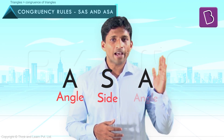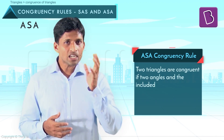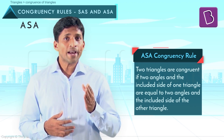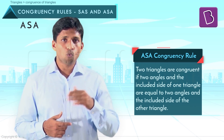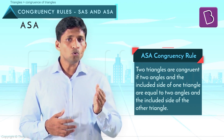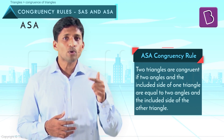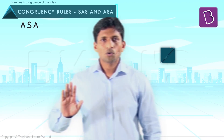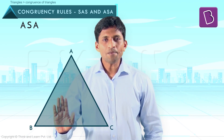Now we will discuss the ASA rule for congruency. ASA stands for Angle Side Angle. Two triangles are congruent if two angles and the included side of one triangle are equal to two angles and the included side of the other triangle. Let's take triangle ABC.